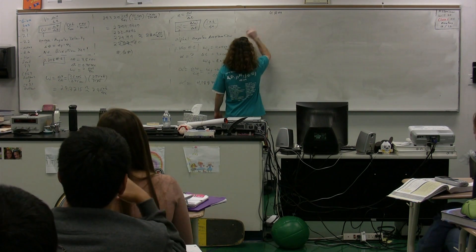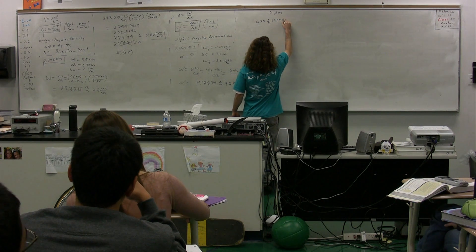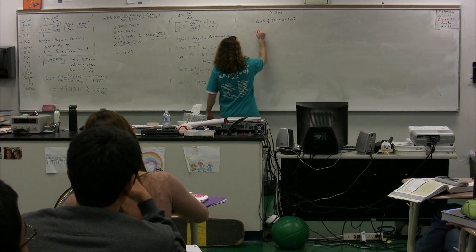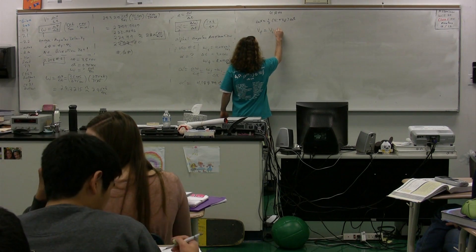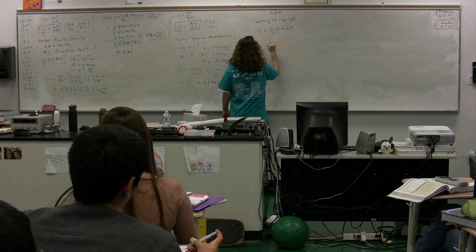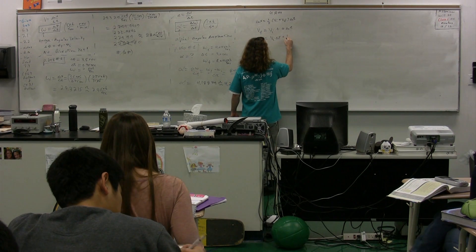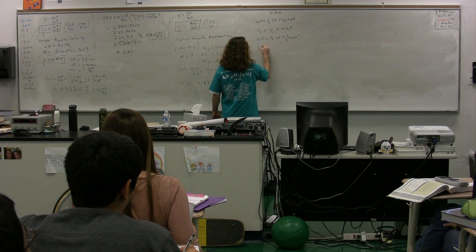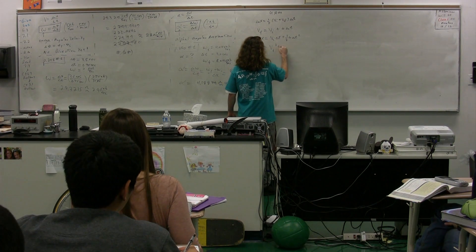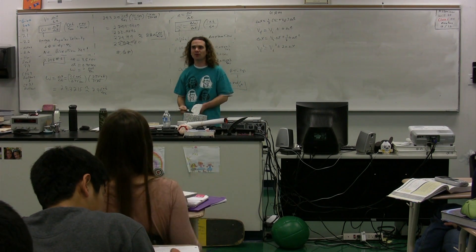We have the U-A-M equations. Delta X equals one-half times velocity initial plus velocity final times delta t. The velocity final equals the velocity initial plus the acceleration times the delta t. We have delta X equals velocity initial times delta t plus one-half times the acceleration times delta t squared. And velocity final squared equals velocity initial squared plus two-A delta X. These are the U-A-M equations.